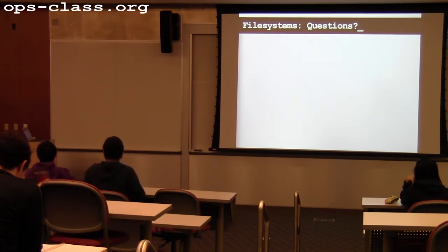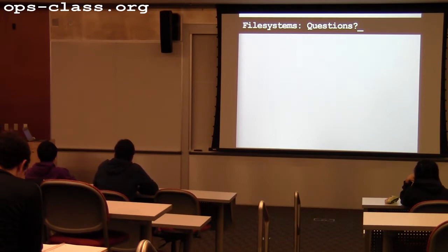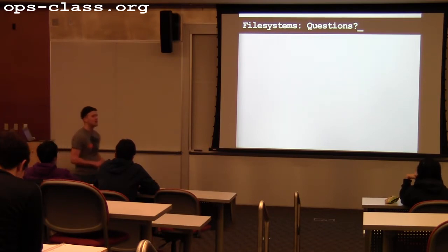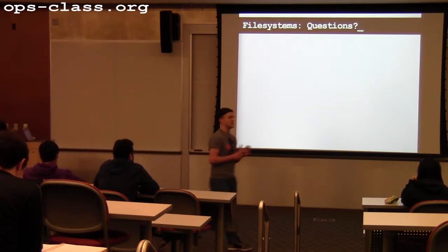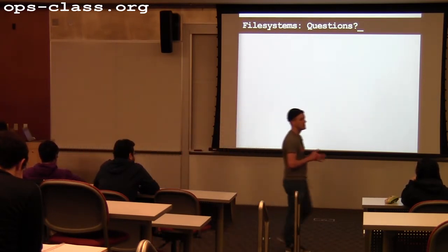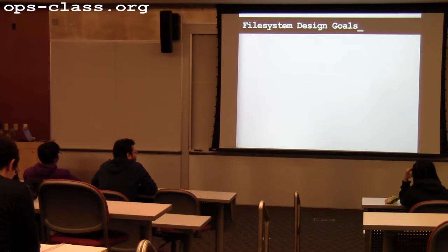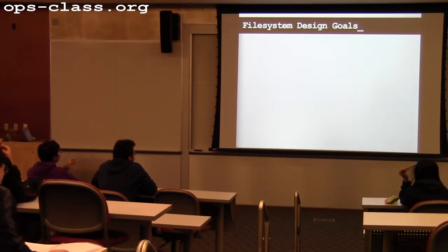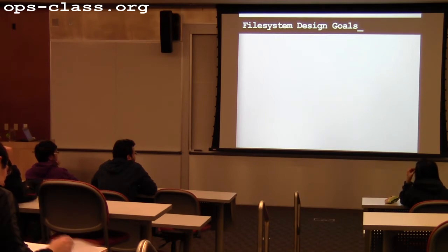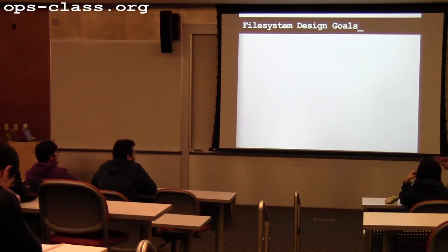Any questions on file systems up till this point? We're going to do a little bit of a review talking about design goals, file system operations, how we translate path names, and how we find data blocks. Who remembers what the design goals for our file systems were? We're going to start coming back to these today when we talk about caching.